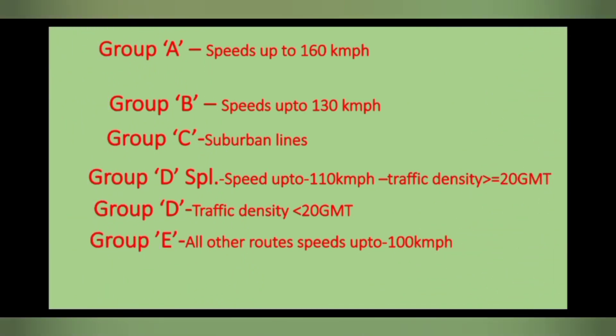The maximum permissible speed of 160 kmph is classified as Group A route. Maximum permissible speed of 130 kmph is classified as Group B route.